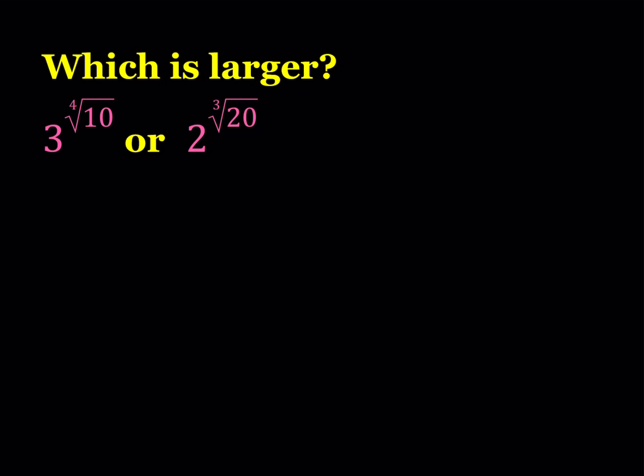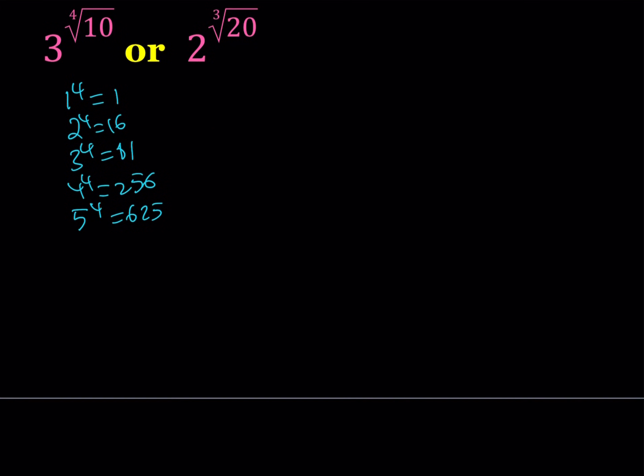I'm going to start by looking at the 4th power of integers because that's what I'm going to use to estimate the 4th root of 10 without using a calculator. So, let me make a list of the 4th powers and the 3rd powers. I have 1 to the 4th power is 1, 2 to the 4th is 16, 3 to the 4th is 81, 4 to the 4th power is 256, 5 to the 4th power is 625, it's like 5 squared squared.